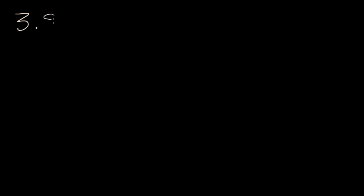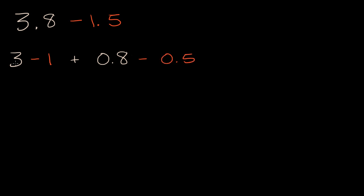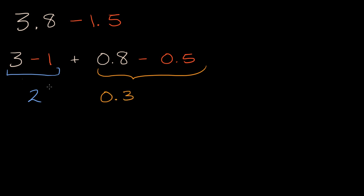Let's do a few more examples that get a little more involved. We want to calculate 3.8 minus 1.5. We can view this as three minus one — subtracting the ones — plus eight-tenths minus five-tenths. We have three and eight-tenths minus one and five-tenths. Three minus one equals two, and eight-tenths minus five-tenths is three-tenths. So this is going to be two and three-tenths, which we could write as 2.3.